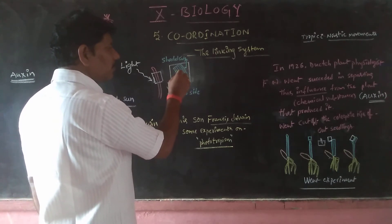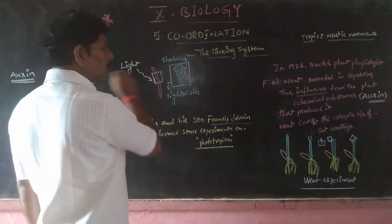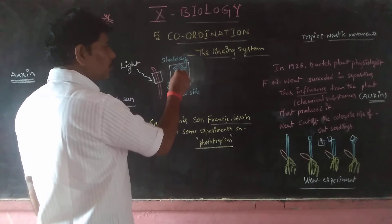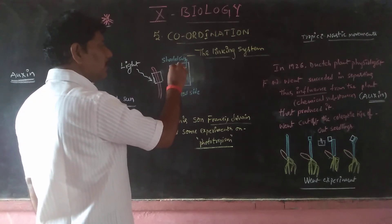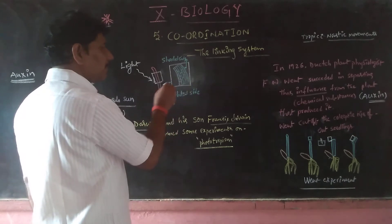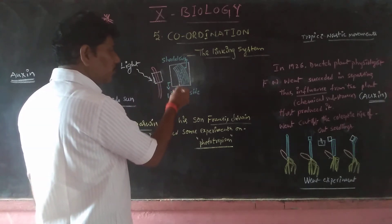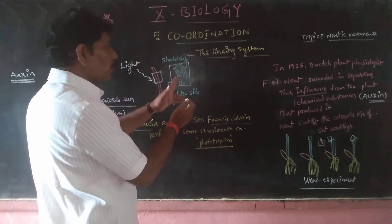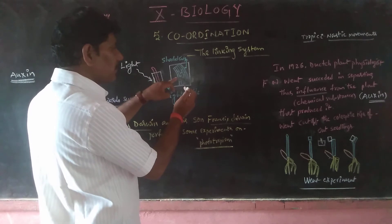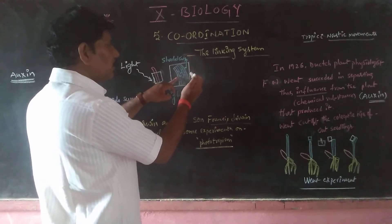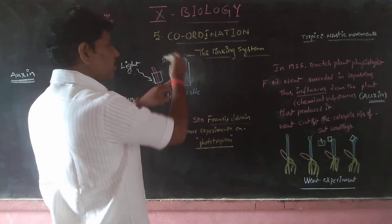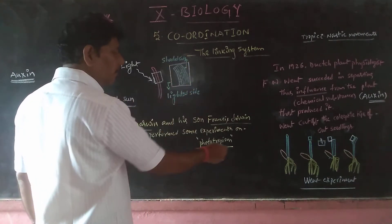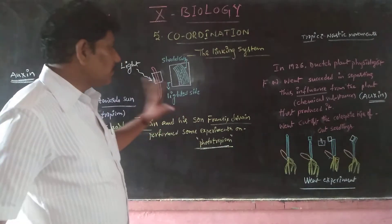The cells on the lighted side divide faster compared to the shaded side. When cells at the tip grow rapidly due to the external stimulus, the lighted side shows fast growth while the shaded side shows low growth. Because of more cell growth on one side than the other, the bending occurs. This influence was identified as the chemical substance produced in the plant.